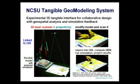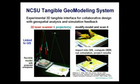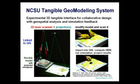What we have done at NC State is take this concept and hook it to a geographic information system, which opened many more possibilities. The system has a three-dimensional laser scanner — that's how you get the data into the GIS — and projectors, which project the data from the GIS onto the three-dimensional model. We can modify the model, import it into GIS, compute the DEM, run the simulation, and project the results, generating many different scenarios very quickly.